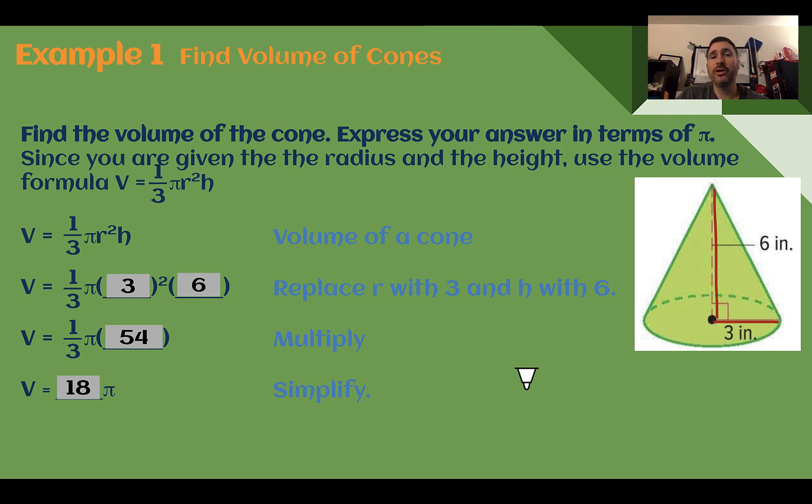Last, just like we were doing with cylinders, we need to decide are we keeping the pi symbol in the answer or multiplying it out using a calculator? It says in terms of pi, so we need to leave it in the answer. So the volume of this cone is 18 pi cubic inches.